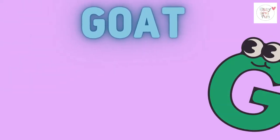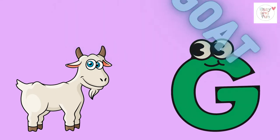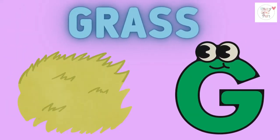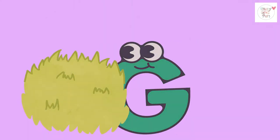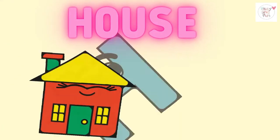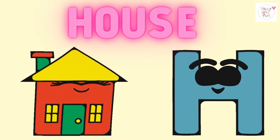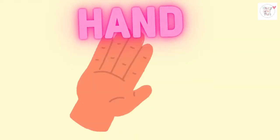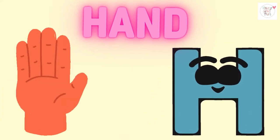G is for goat, g-g-goat. G is for grass, g-g-grass. H is for house, h-h-house. H is for hand, h-h-hand.